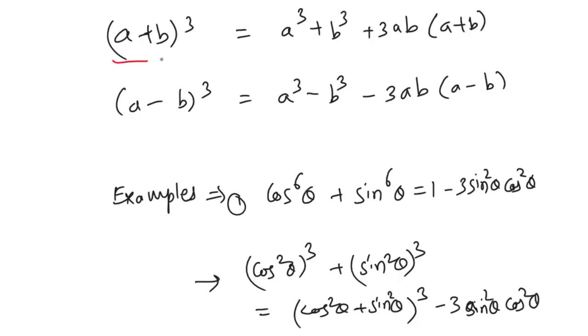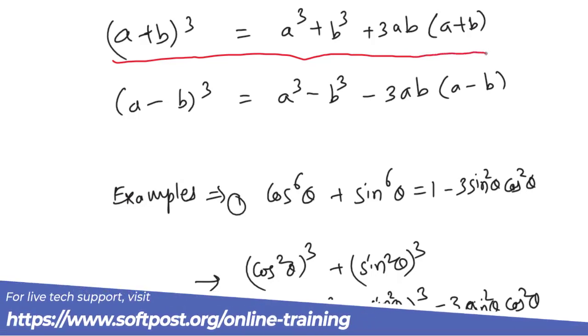The main identity is (a+b)³ = a³ + b³ + 3ab(a+b).